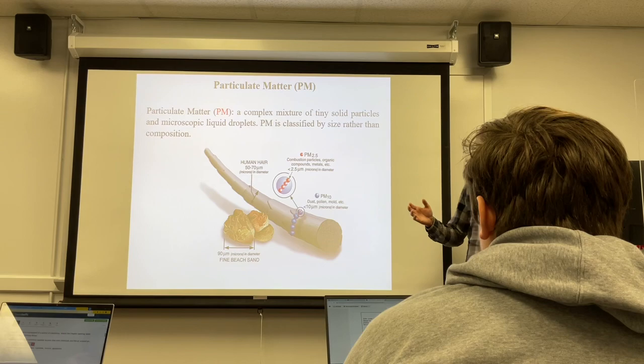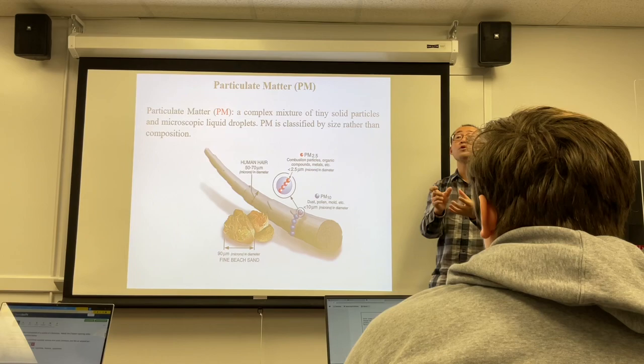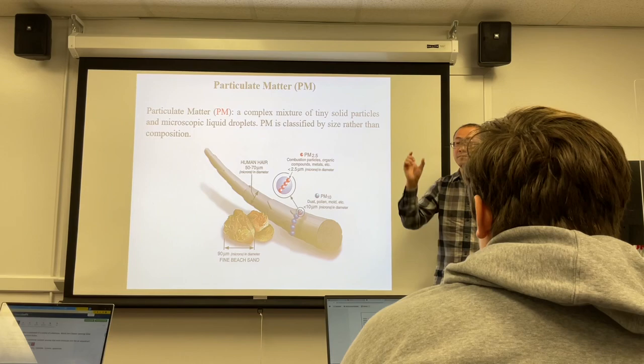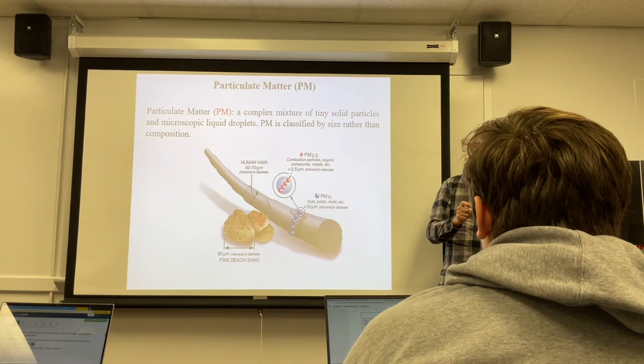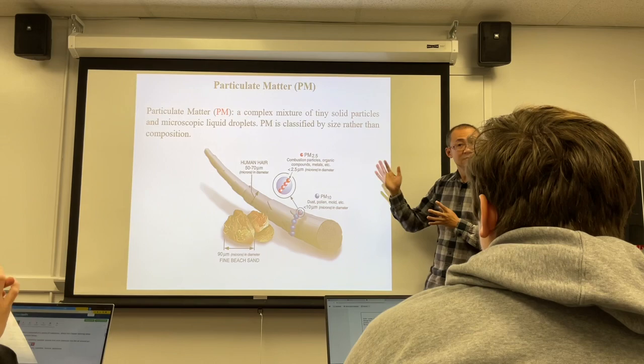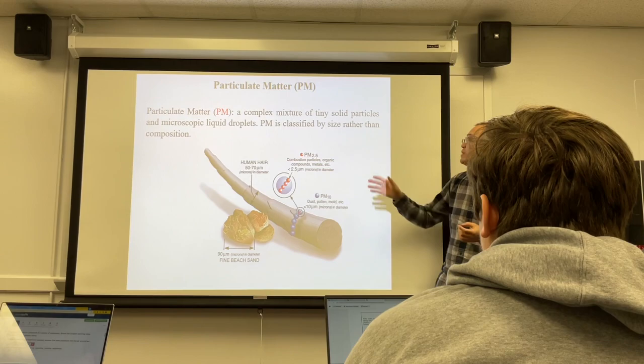Sulfur dioxide, nitrogen dioxide, ozone, and carbon monoxide are pure substances. Matter is classified into mixture and pure substance. Those individual ones — ozone, carbon monoxide, carbon dioxide, sulfur dioxide — are all pure substances by themselves. But particulate matter (PM) is not a pure substance; it's a complex mixture.